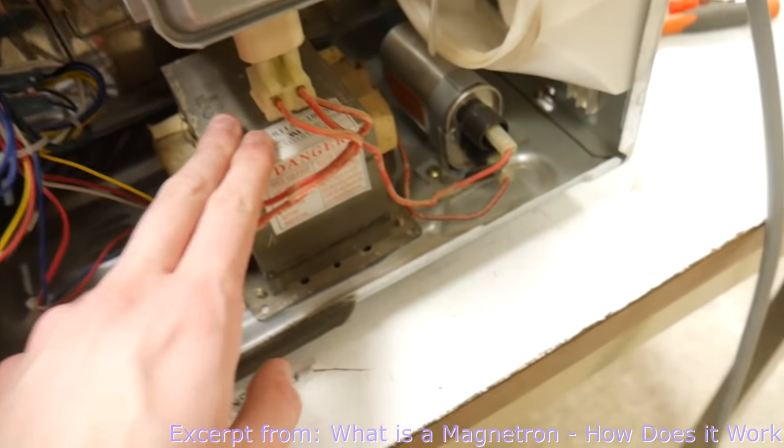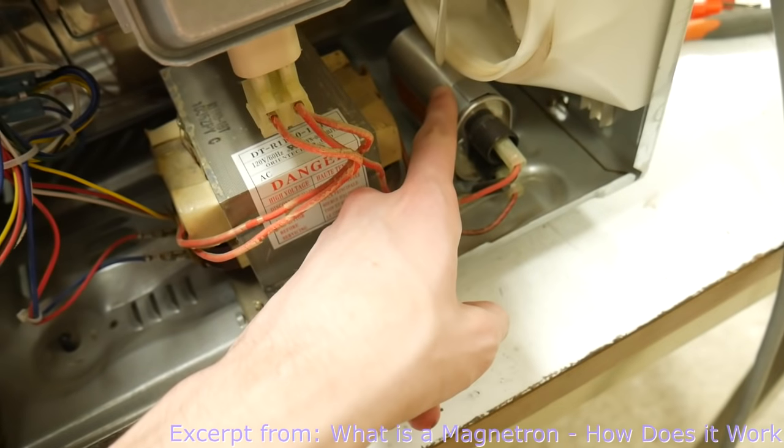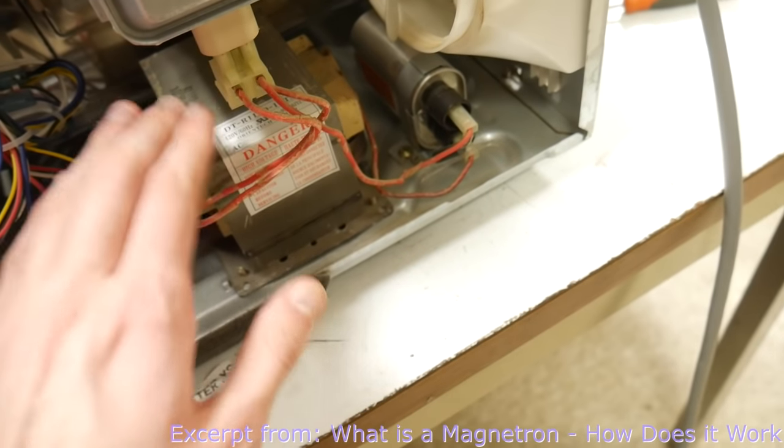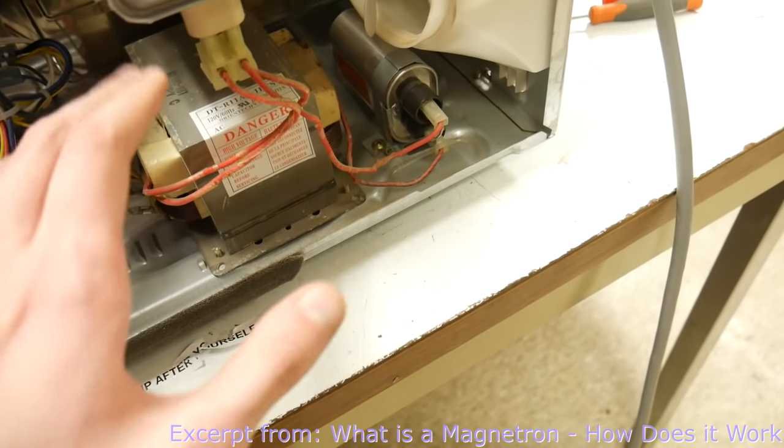Down here we have a 2,000 volt transformer and a 2,000 volt capacitor. It's because of these that you never work on a microwave while it's plugged in. Your main concern is the high voltage.